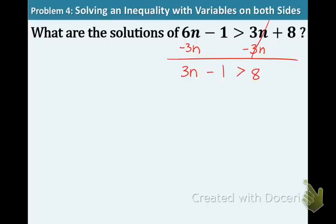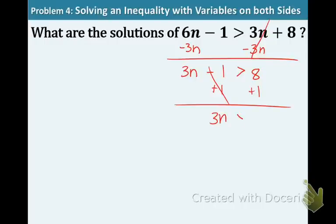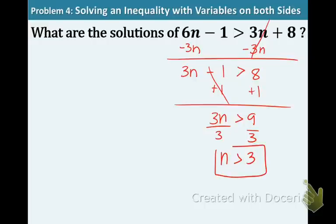Now we have a two-step equation. We're going to bring the negative 1 over, so we're adding 1 to both sides. Now we have 3n is greater than 9. Divide both sides by 3, because that's the opposite of multiplication, and you get n is greater than 3. That's the solution for this example.